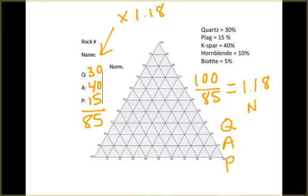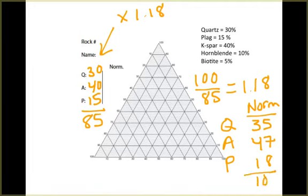The normalized values are: quartz is 35%, alkali feldspar is 47%, and plagioclase is 18%. And that now adds up to 100. Those are the values that we'll need to use in order to plot on the ternary plot.